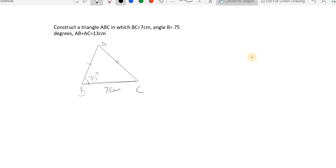The first thing you have to do is draw a line BC of 7 centimeters. So this is 7 centimeters with the scale. BC is drawn 7 centimeters. Then you have to draw an angle of 75 degrees.